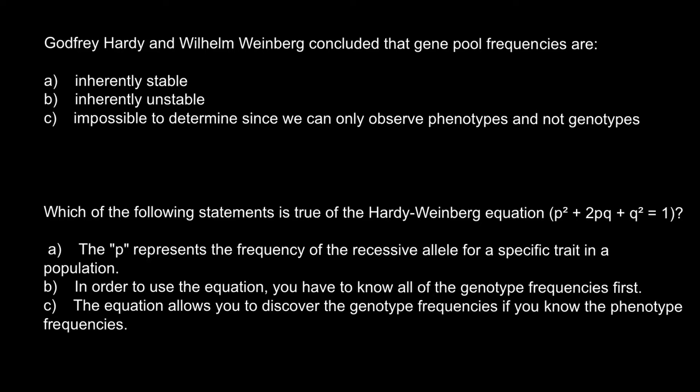The correct answer would be A. Gene pool frequencies are inherently stable. We can find gene pools that are unstable, but such gene pools would be under certain influences of the environment. For example, some genotypes would have better fitness, or there would be assortative matings. Other factors like small population size may cause allelic frequencies to change from one generation to another. But normally, if the population is large and we assume no mutation, no preferential matings, and no other factors influencing allelic frequencies, the gene pool would be inherently stable.